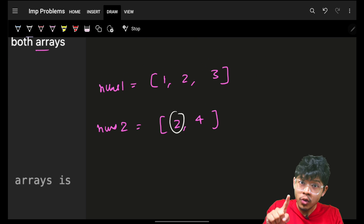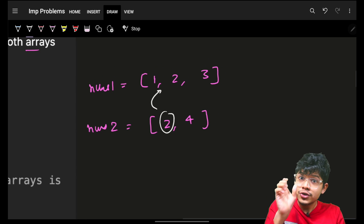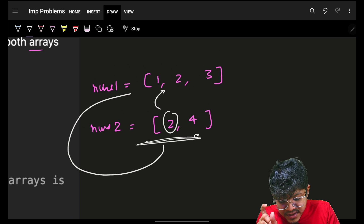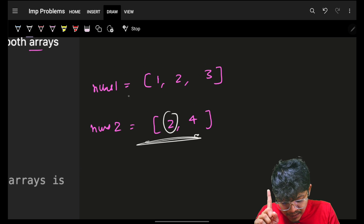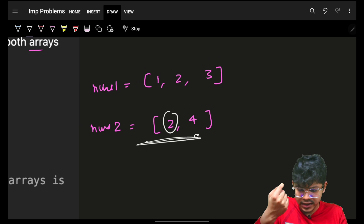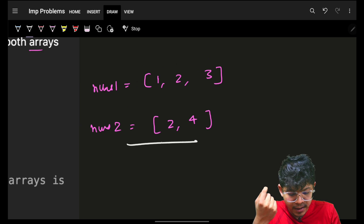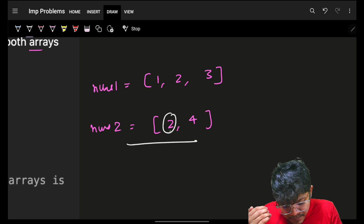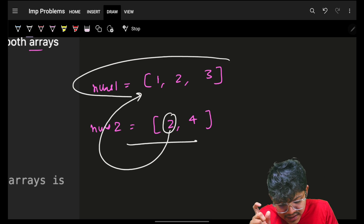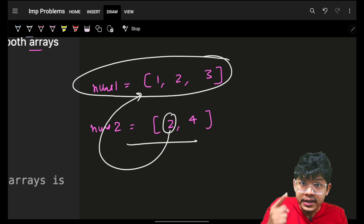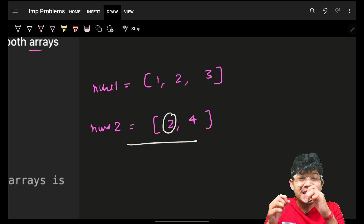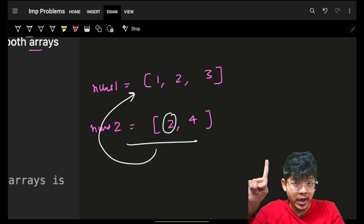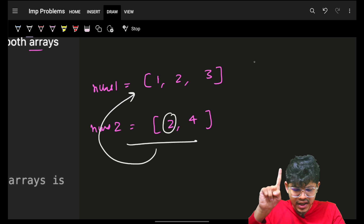We need to find any element in nums2 which is also present in nums1. One way to check if an element is present: we can take nums2 and ask if that element is present in nums1. Since nums1 is sorted, to check if some element is present in a sorted array, we can simply apply a binary search. That's option number one.